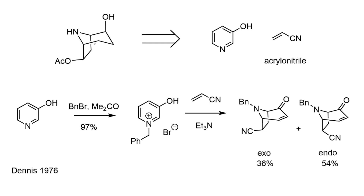The centerpiece of this synthesis is the disconnection of the two-carbon unit from the bottom of the piperidine ring, bringing us back to two starting materials: an aromatic building block, 3-hydroxypyridine, and acrylonitrile to provide the extra two carbons as well as the acetate group. This work is based on a publication by Dennis and co-workers from 1976, a fascinating paper detailing these cycloaddition reactions.